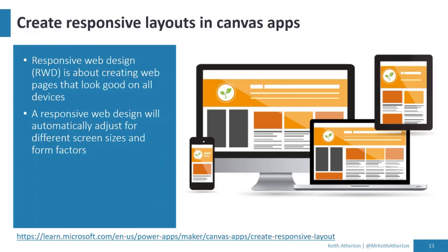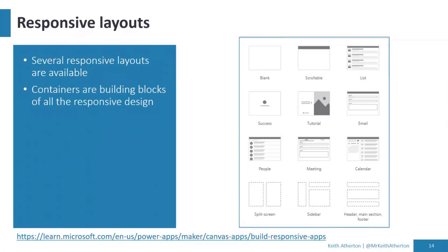Something called responsive web design, which is quite popular with web development, is a way — as the illustration shows for laptops, mobiles, and other form factors — to reuse the same app by realigning and resizing things. We can do that with Power Apps too. We've got responsive layouts to help us get started, which are often just a collection of containers. You can see things like split screens and sidebars, and you can modify these and make your own.